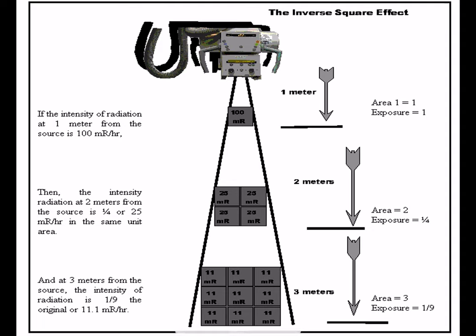In distance, we follow the inverse square law. The intensity of radiation is inversely proportional to the square of the distance from the source. When the distance from a source of radiation is doubled, the radiation at the new location spans an area four times larger than the original area; however, the intensity at the new distance is only one-fourth the original intensity.